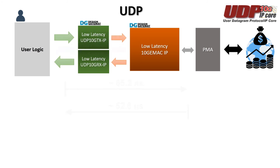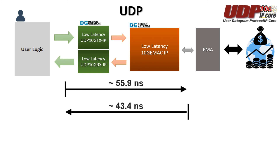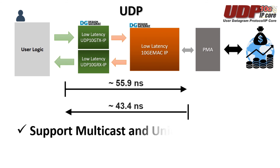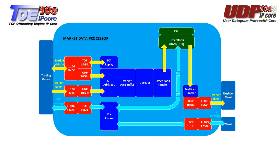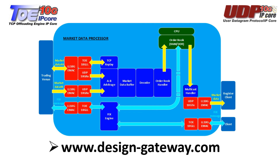For the UDP system, the TX part latency is around 55.9 nanoseconds and the RX part latency is around 43.4 nanoseconds. For FinTech applications, we also support multi-session. If you're interested in our low latency network IP solution or the other modules for FinTech applications, you can contact us for customization support at www.designgateway.com or click the link in the description below.